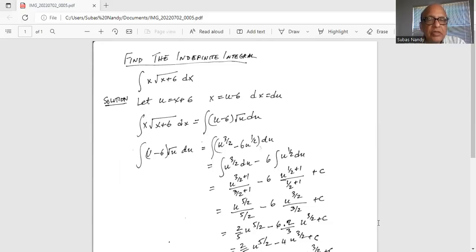So we'll substitute u equal to x plus 6, therefore x is equal to u minus 6 and dx is equal to du. So integration of x square root of x plus 6 dx is integration of u minus 6 times square root of u du.